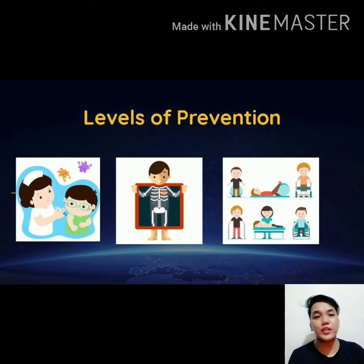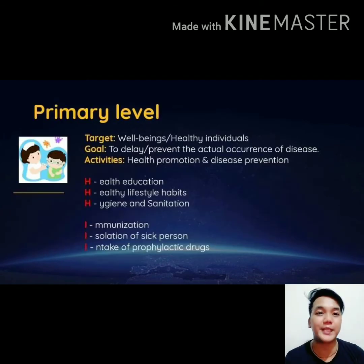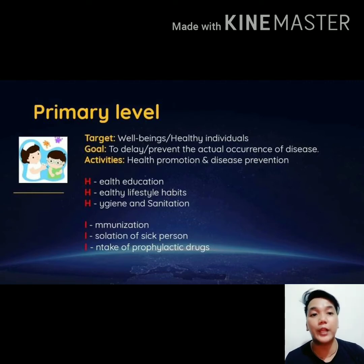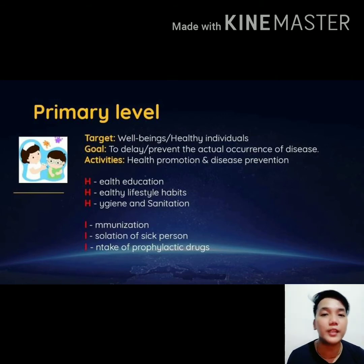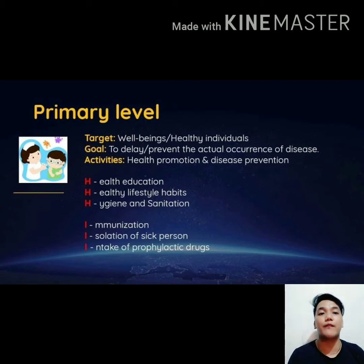We have three levels of prevention. For the primary level of prevention, the target individuals are healthy individuals — those who do not yet have any illness. The goal of primary level of prevention is health promotion and disease prevention, specifically to delay the actual occurrence of disease or injury.